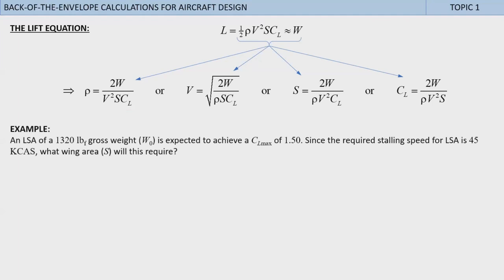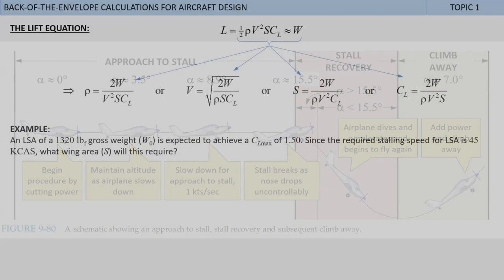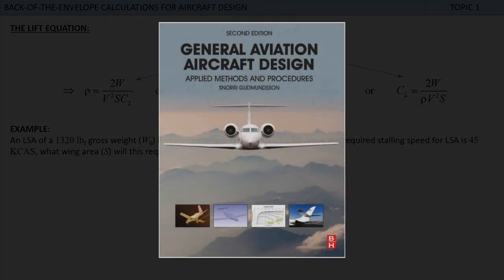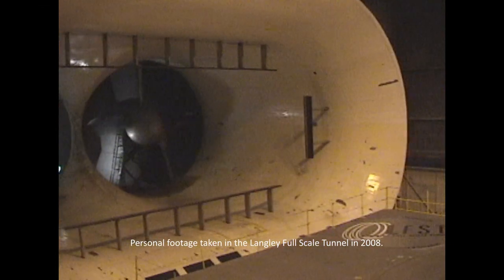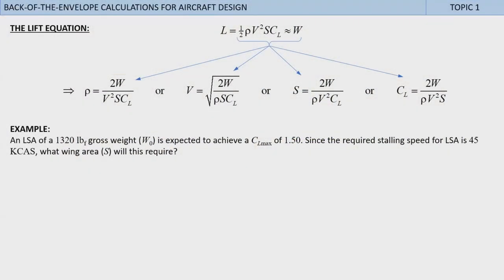First, an LSA of 1,320 pound gross weight W₀ is expected to achieve a CLmax of 1.5. Since the required stalling speed for LSA is 45 knots, what wing area S will this require? Of course, the maximum lift coefficient is the largest value of the lift coefficient and is associated with the lowest airspeed an airplane can attain, the stalling speed. CLmax is typically obtained in conceptual design using methods such as those presented in section 9.5.5 in my book, or through wind tunnel testing, or various computational fluid dynamics methods, and eventually during flight testing. To estimate a ballpark wing area required to achieve the 45 knot stalling speed, we select the third equation from the left and then plug and chug to get 128.3 square feet.